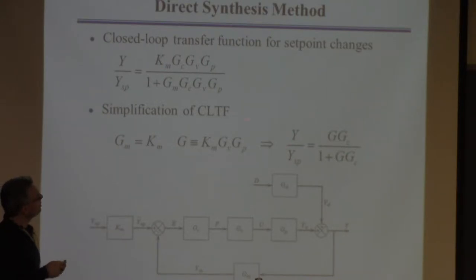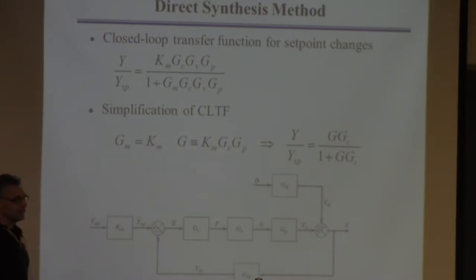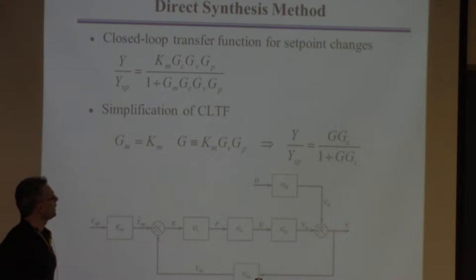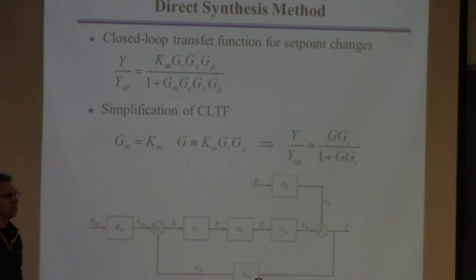If you do this, you can rewrite the closed-loop transfer function more simply. The numerator has Km, Gv, Gp — that's what I call G — and then Gc. Because we've assumed Gm equals Km, you can write one plus that in the denominator. For the foreseeable future, this is how we'll want to write closed-loop transfer functions. G is the process dynamics including the valve and measurement device; Gc is the controller.